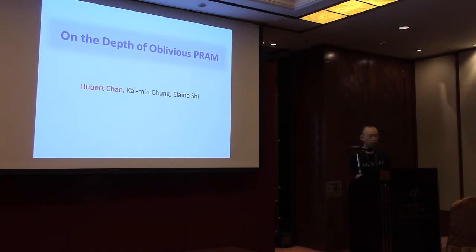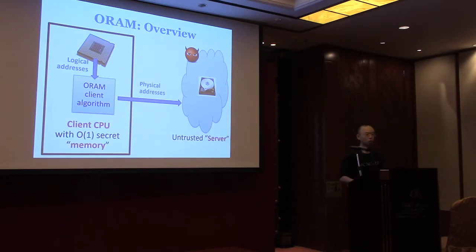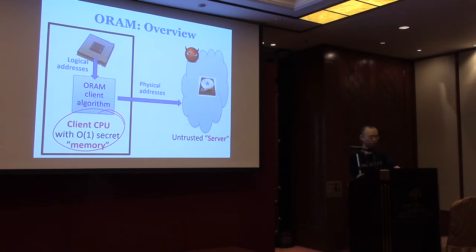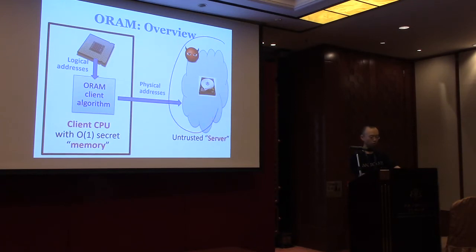Thanks for the introduction. In this talk, we're going to investigate the depth of oblivious ORAM. So let's start from the basics. What is an ORAM? An ORAM, essentially, is a very useful construct. There's a part that is secure — we can think of that as the CPU or the client, which has some constant-sized secret memory. And then there's a larger memory that is untrusted — usually the hard disk or the server — so the adversary can observe what's going on there.